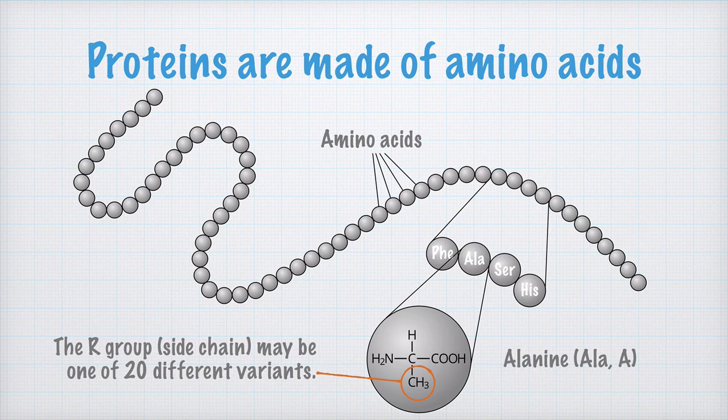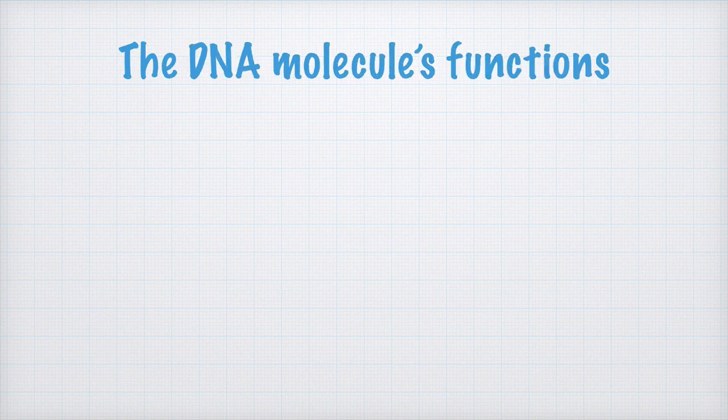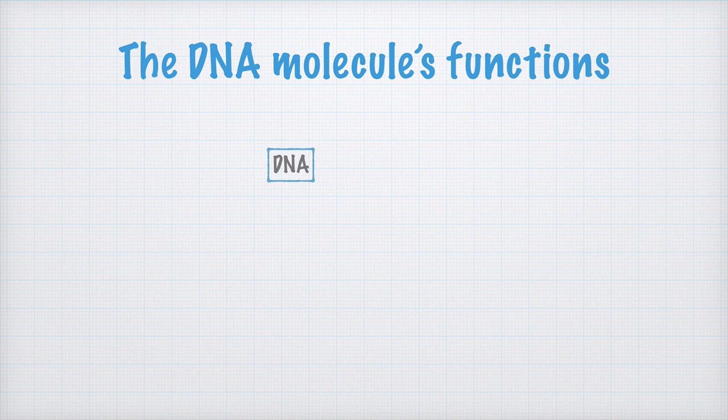To understand how this is achieved, you also need to remember what the functions of a DNA molecule is. First, the DNA molecule contains recipes or information on how different proteins are made. Second, the DNA molecule has the ability to pass this information on to the next generation.